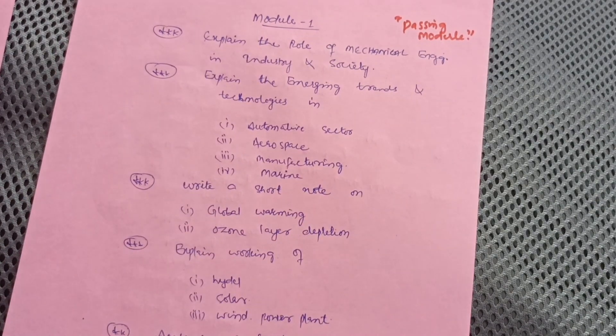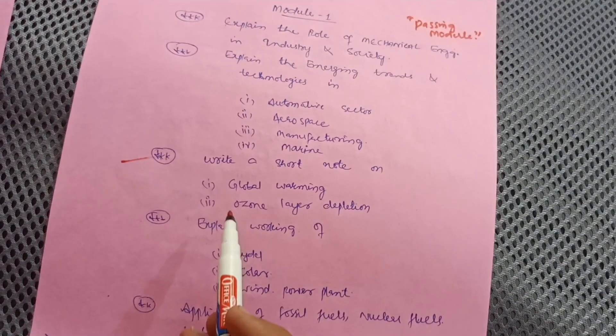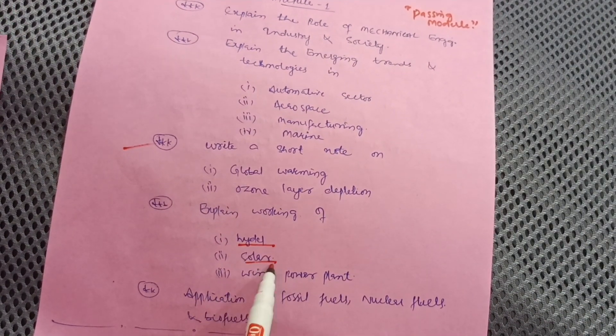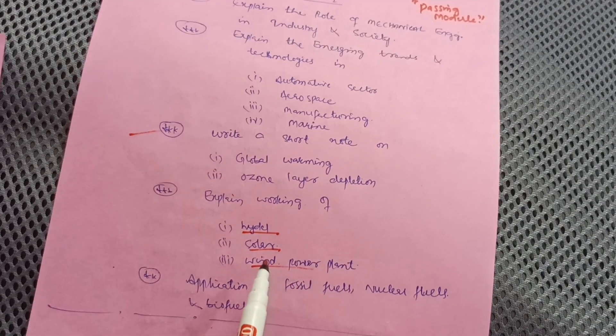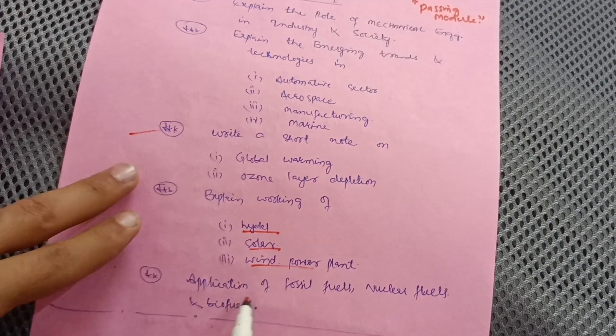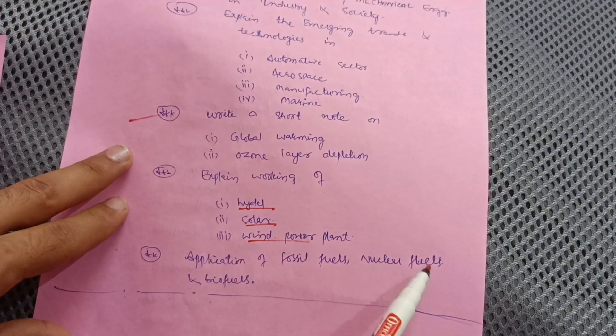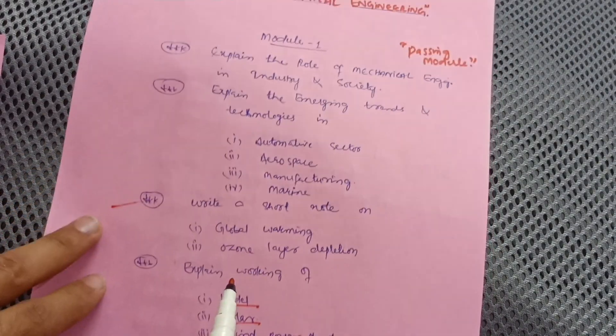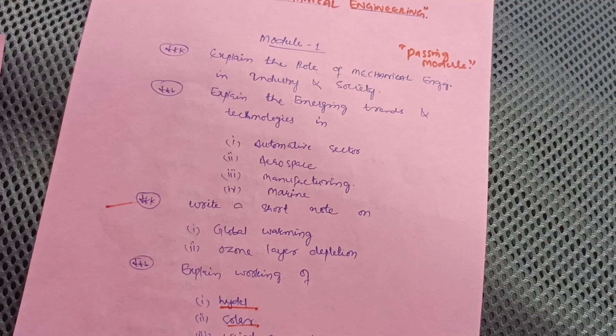Then explain working of hydel power plant, solar power plant, and wind power plant. Definitely one will appear in the examination. And applications of fossil fuels, nuclear fuels, and biofuels. This much content is enough for Module 1 to easily get 20 marks.